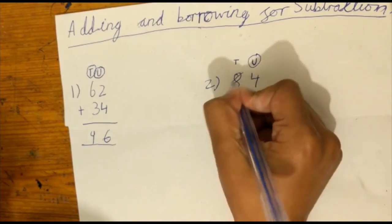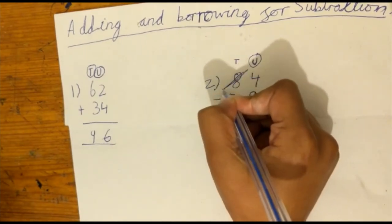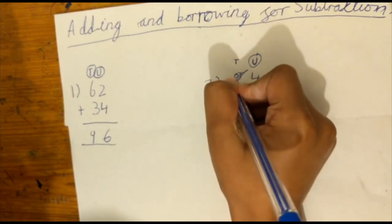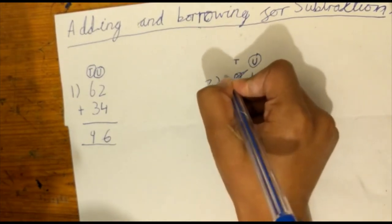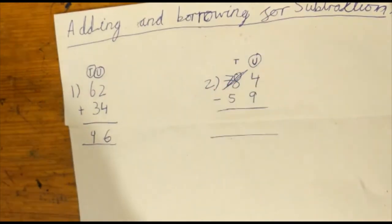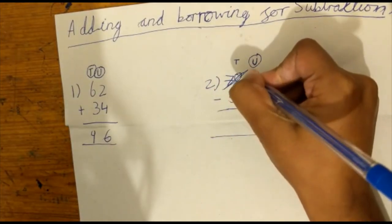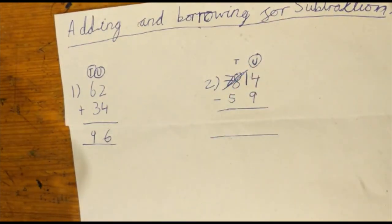So then if you subtract, you cross the 8 out and then subtract 1 from it. So 8 take away 1 is 7. So you're going to put 7 next to the 8. And then you're going to place the 1 next to the 4. Now you can do 14 take away 9.